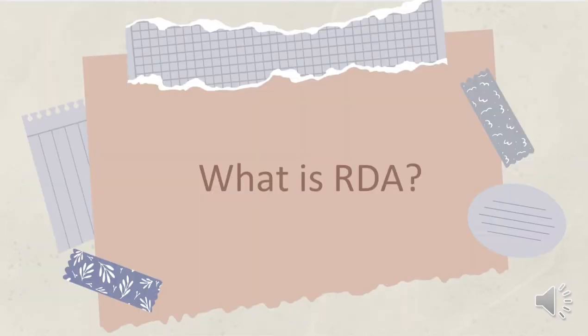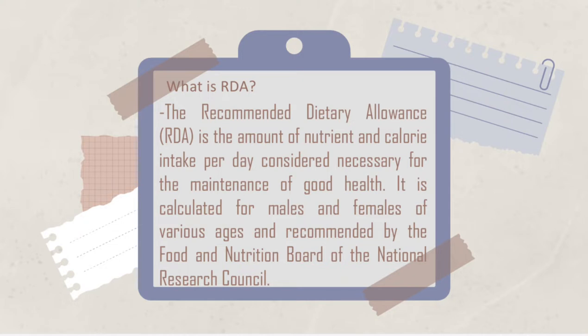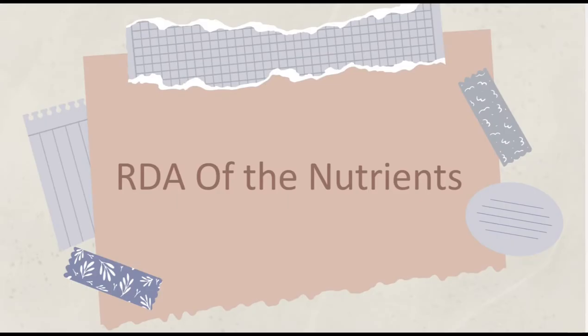To start off, what is RDA? The recommended dietary allowance, or RDA, is the amount of nutrient and calorie intake per day considered necessary for the maintenance of good health. It is calculated for males and females of various ages and recommended by the Food and Nutrition Board of the National Research Council. Let us tackle the RDA of the nutrients.